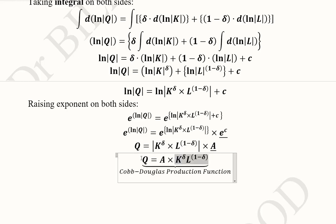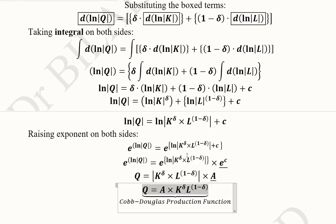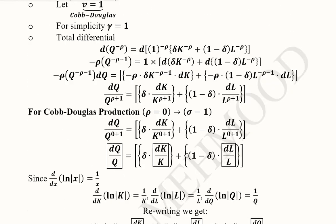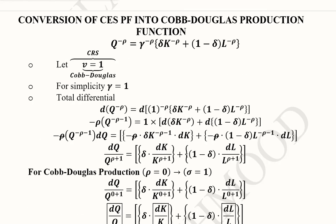And I write this A here and write these variable terms here. So now it appears like a standard form of the Cobb-Douglas production function.